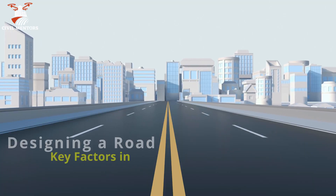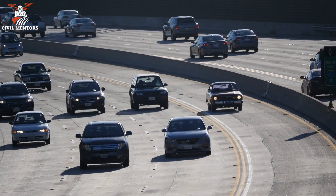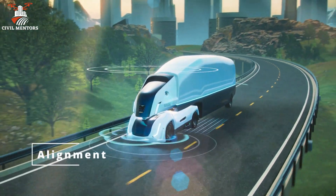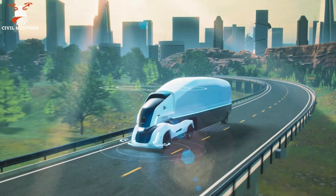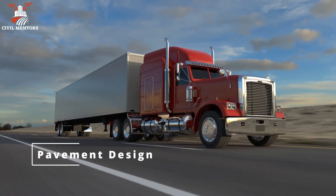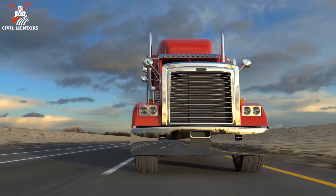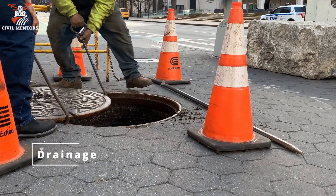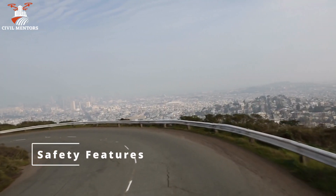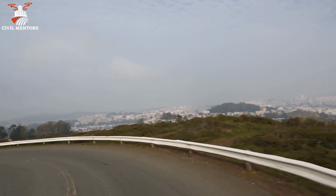Question 8: What are the key factors to consider when designing a road? When designing a road, several factors must be considered to ensure safety, efficiency, and longevity. Key factors include alignment — the horizontal and vertical alignment of the road should provide smooth and safe transitions between curves, gradients, and intersections. Pavement design — the pavement layers should be designed to withstand the anticipated traffic loads and environmental conditions. Drainage — proper drainage systems should be in place to prevent water accumulation and minimize the risk of flooding or pavement damage. Safety features — road designs should incorporate features such as guardrails, lighting, and signage to minimize accidents and enhance visibility.